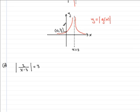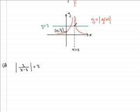y equals 3 would be where the line y equals 3 — let's draw it on, in green. Imagine that this is the line y equals 3 going through here; let's label that y equals 3. It's where this line would cross the curve, and the x values at this point and this point here would be the solutions to this equation.